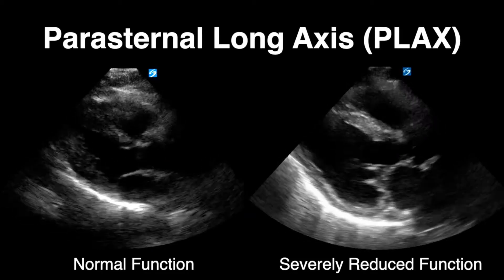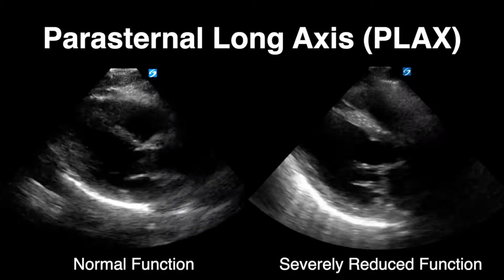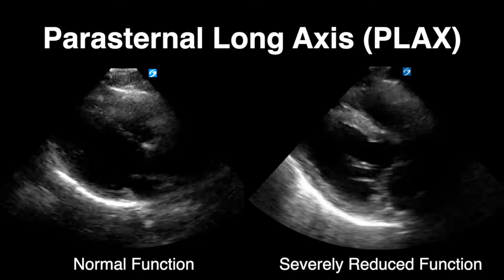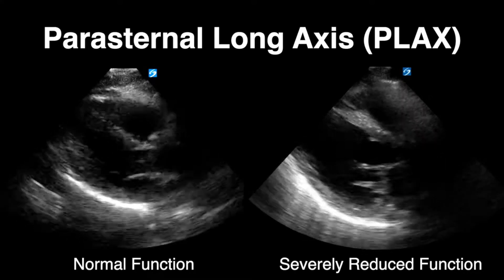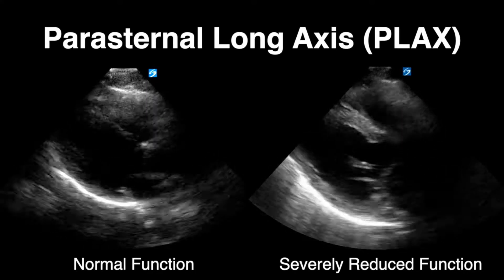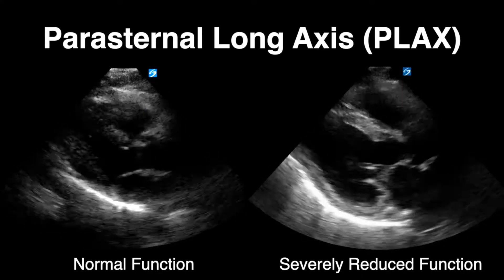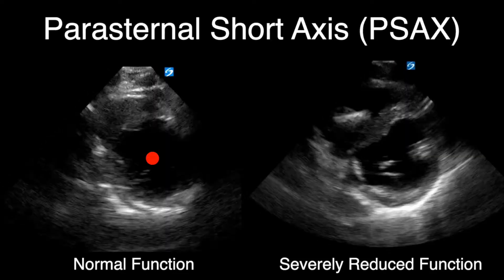Keep in mind we don't rely on just one view for determining function because we may be limited in what walls we're seeing. Moving to the parasternal short axis, I like to think of a small red dot in the middle of the left ventricle and evaluate how well all the myocardial walls collapse down toward that dot.